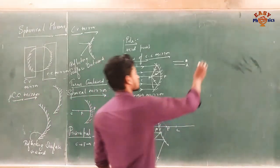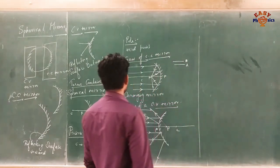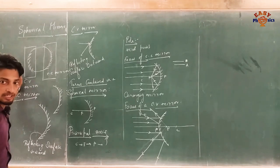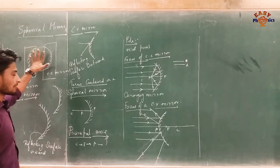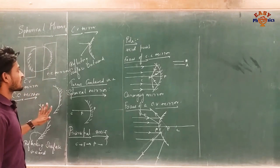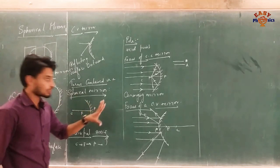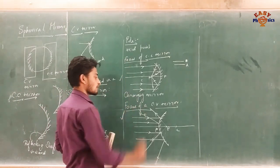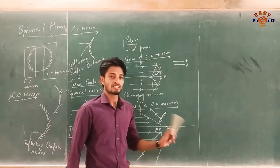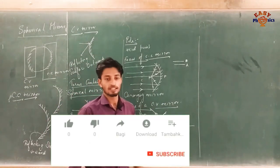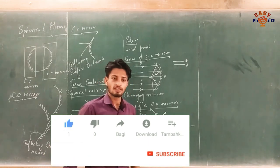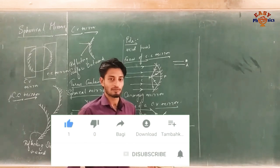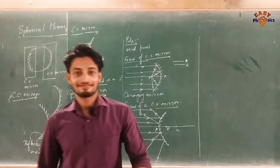All right, let's revise these terms. What is a spherical mirror? Concave mirror and convex mirror. The most important thing is the focus of a concave mirror and focus of a convex mirror — their reflecting surface shape. We will discuss more in the next class. Please like, share, and subscribe. Thank you, see you next time.